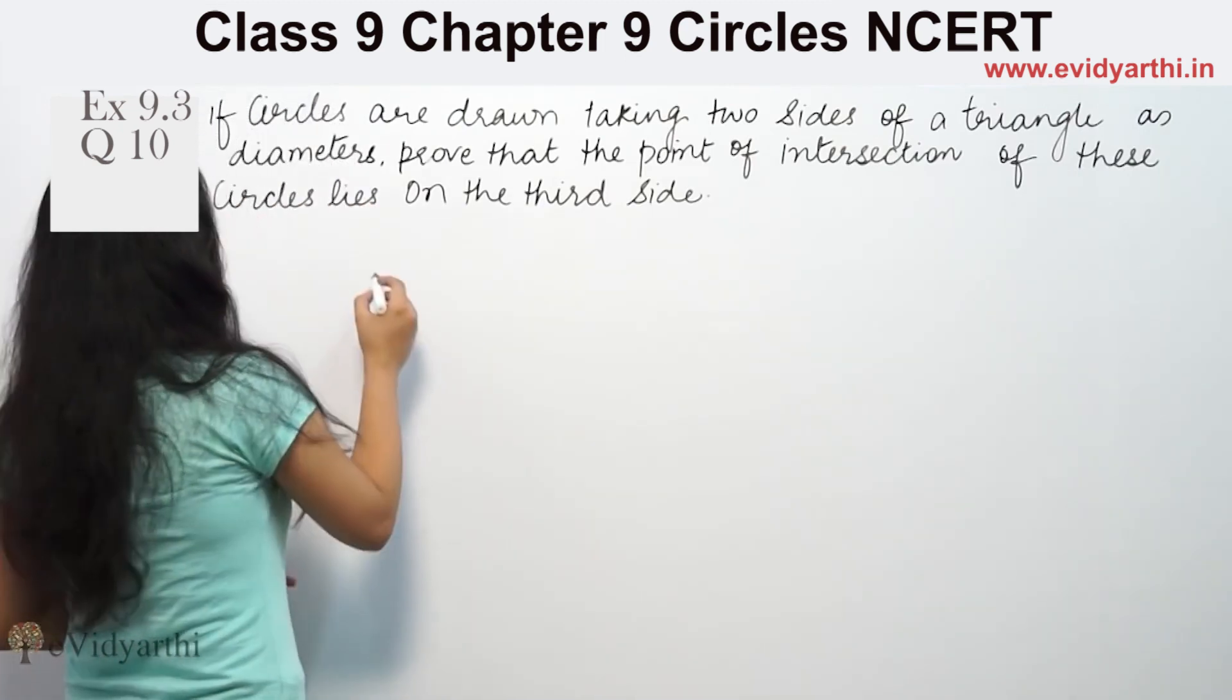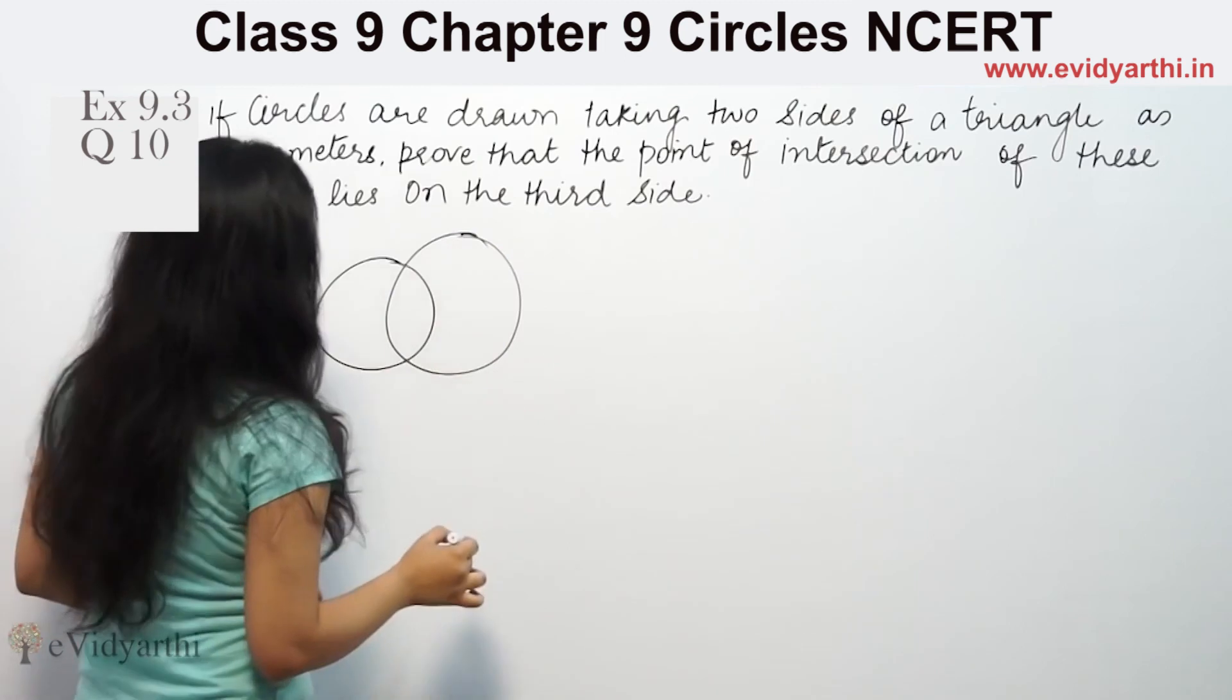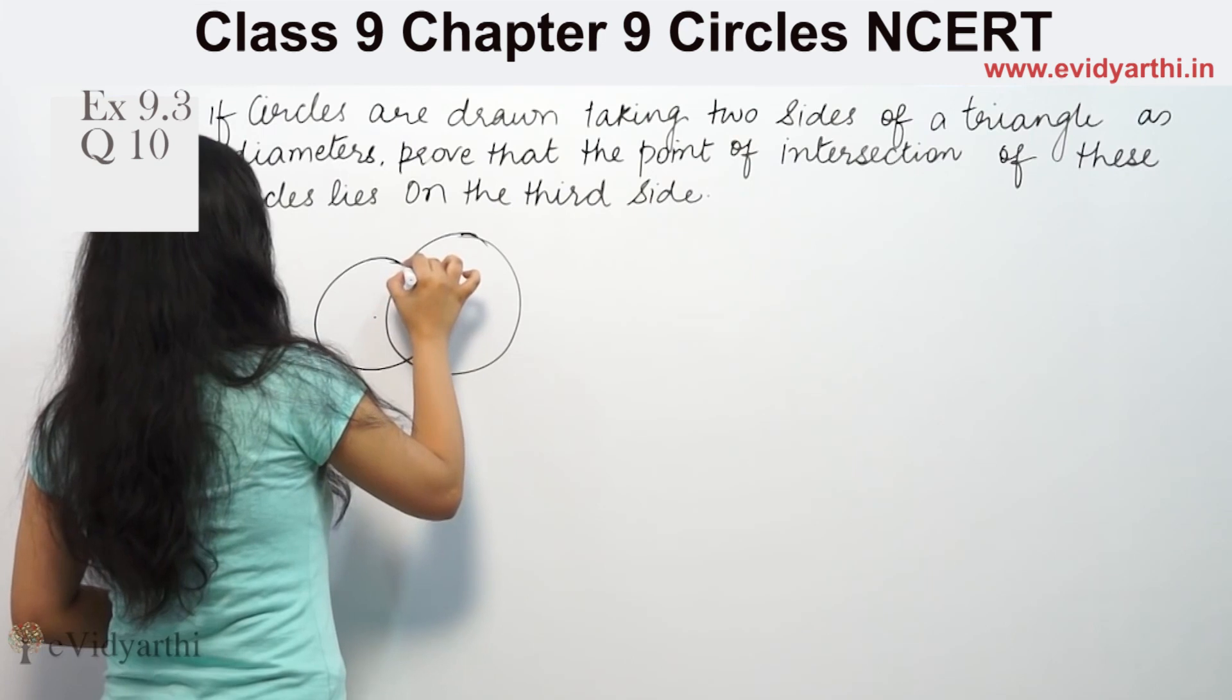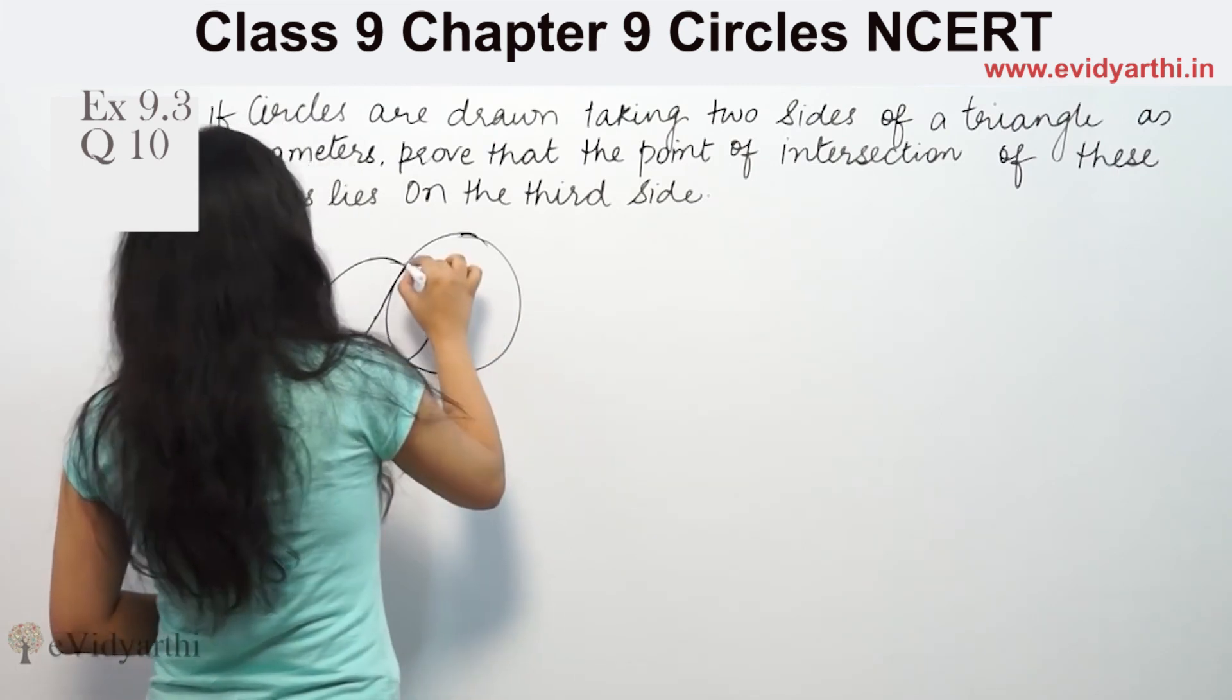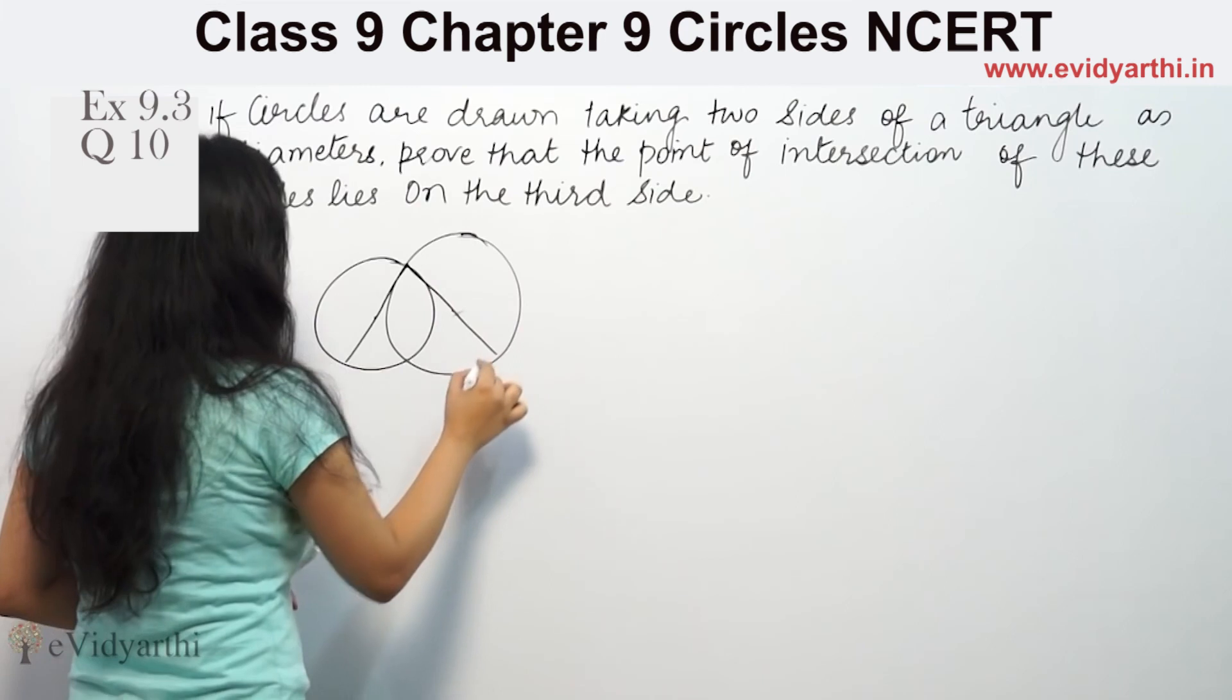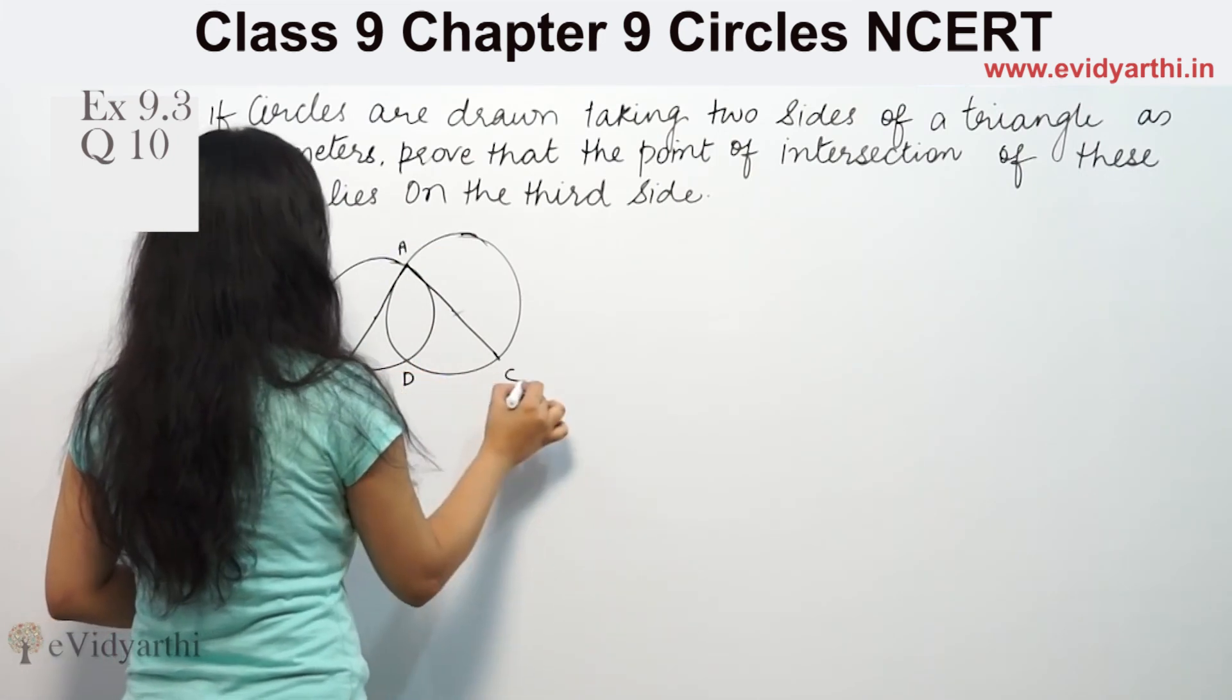Let's draw the circles correctly. A circle here, and another circle. Now we have a circle with this as diameter. Suppose this is the center for this circle. This is the diameter of this circle. If this is the center of this circle, this diameter is this. This is A, this is D, P, C.